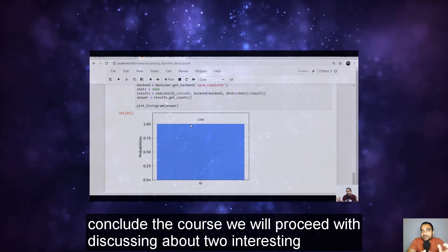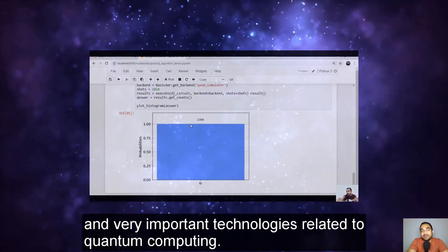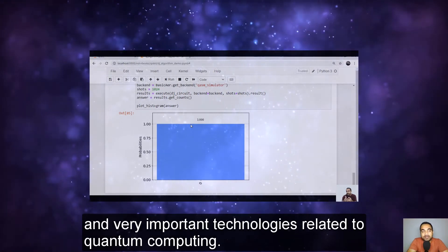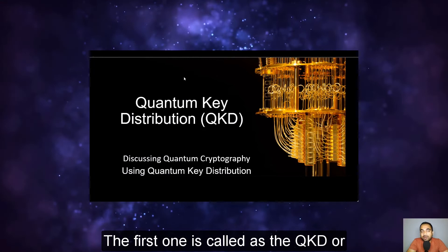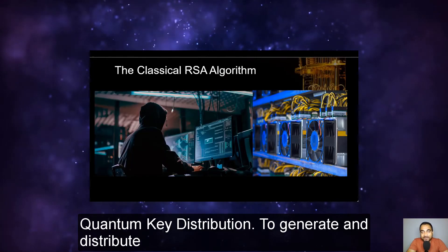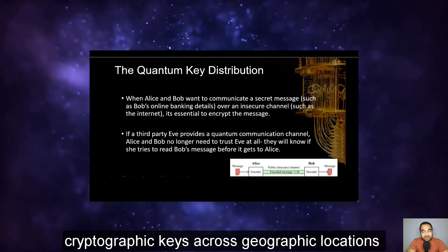Before we conclude the course, we will proceed with discussing two interesting and very important technologies related to quantum computing. The first one is called QKD or Quantum Key Distribution to generate and distribute cryptographic keys across geographic locations through long distance using a virtually non-hackable communications link.